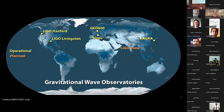There are several observatories located around the world. More observatories means we are more sensitive, because each observatory has various sources of noise. With more observatories, you can compare the signals between them and be more confident that what you saw is an actual detection rather than noise.